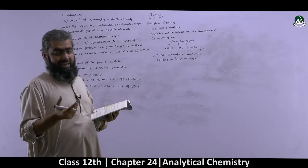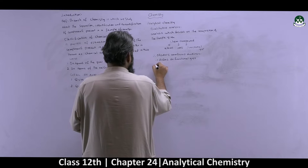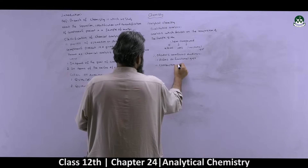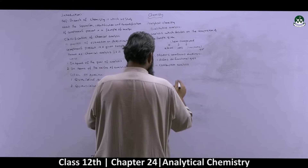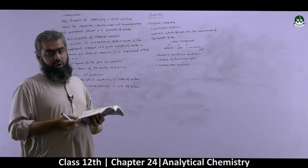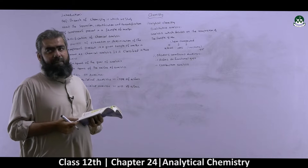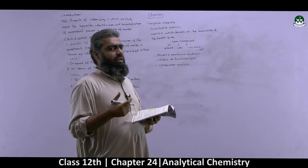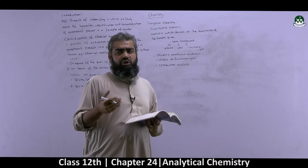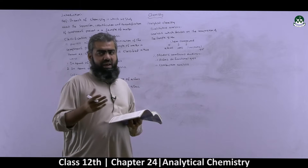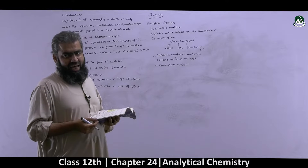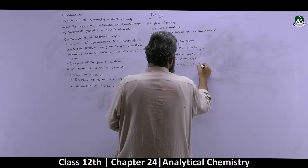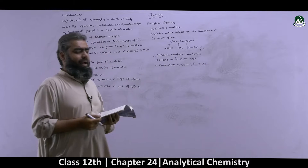In organic compound analysis, we determine the atoms and functional groups present in the sample. The first method is combustion analysis, which is generally applied to flammable organic compounds to find out the presence of carbon, hydrogen, and oxygen — these three elements in an organic compound.